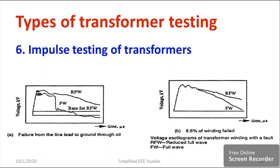By looking at the waveforms, we will come to know if there is any deviation happening in the transformer oil. These are the basic inferences we can make from impulse testing. If you observe such waveforms, the first type is failure from the line lead to ground through the oil — the transformer oil has to be replaced. Regarding winding insulation, if there is a problem, the full wave will droop down — that's the peculiarity.